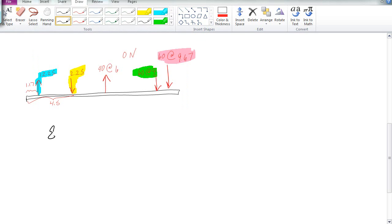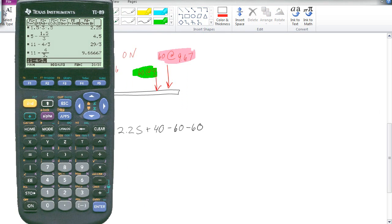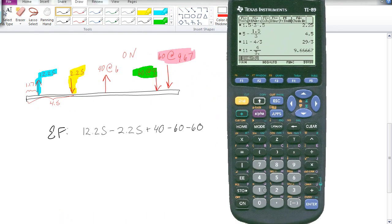So now what I want to say is, what are the sum of the total forces? So all the forces is going to be, I've got 12.25 going up, 2.25 going down, 40 going up, 60 going down, and 60 going down, and if I do all my math, negative 70.